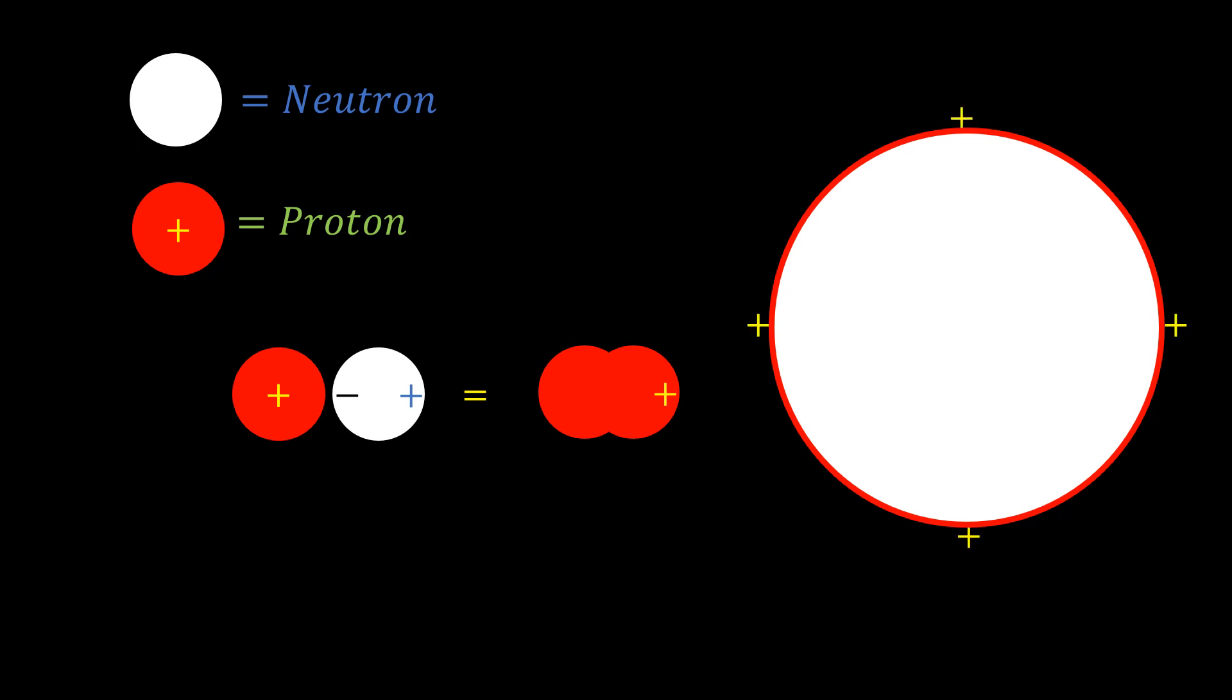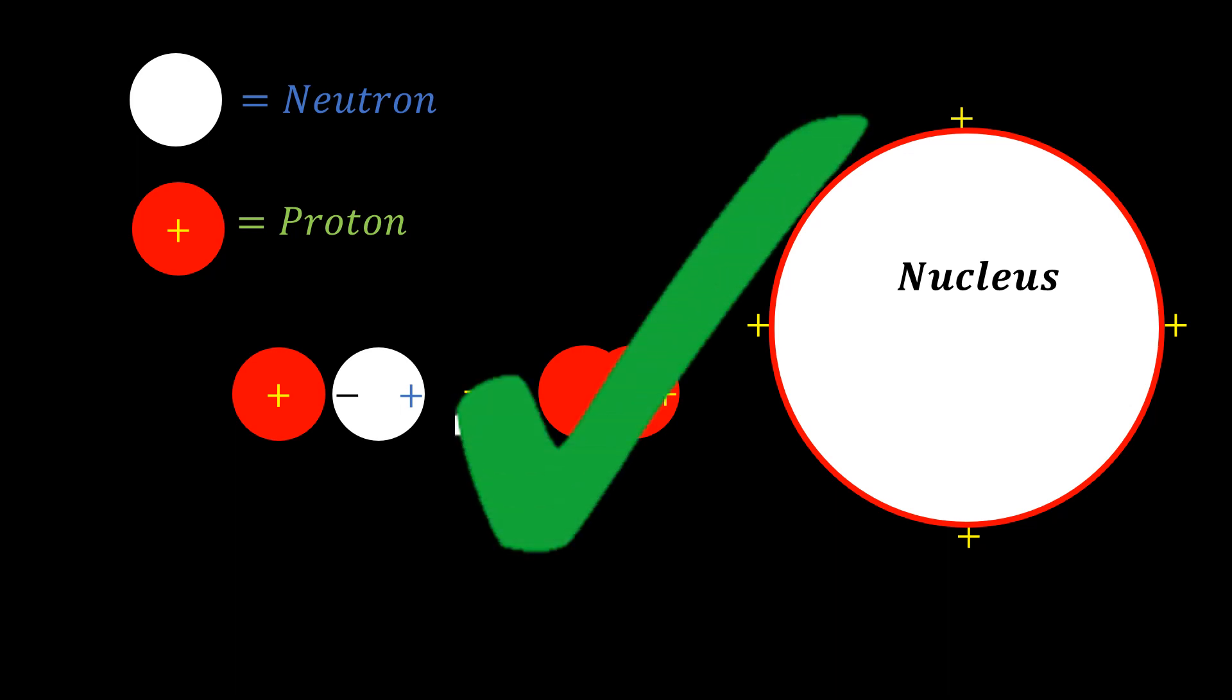Therefore, we do not need any strong force for this system to work. So we have a description of the nucleus without the need to invent the strong force. This model leaves the laws of physics in their simplest forms, and from the argument of the centrifugal force I gave earlier, we can conclude that this is a better model of the nucleus and should therefore be adopted. That is it.